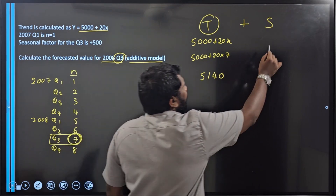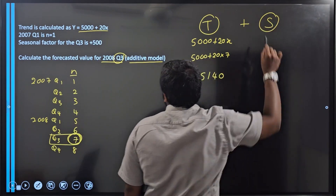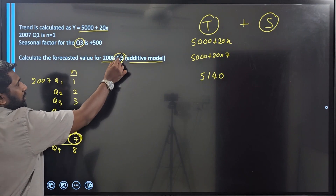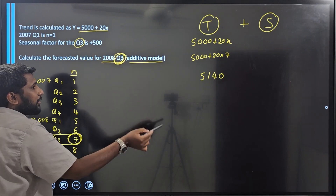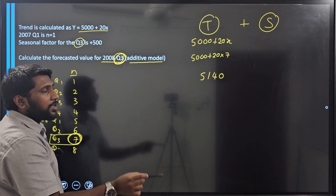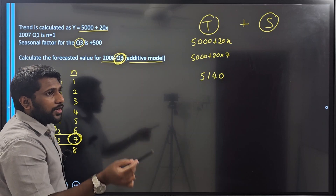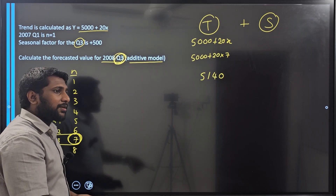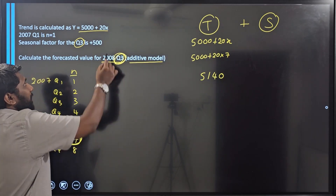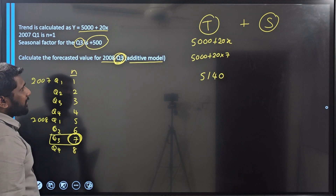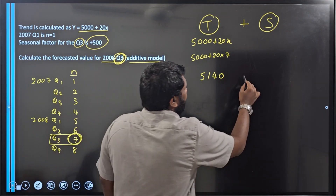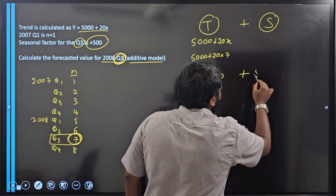Now what's the seasonal factor? In this question they have given the seasonal factor for the third quarter, and we are doing the forecasting for the third quarter. So we need the seasonal factor for the third quarter, which is plus 500.